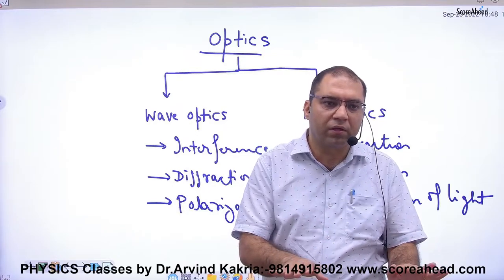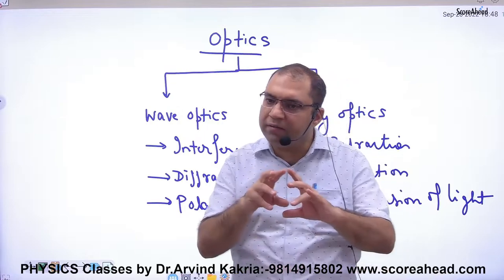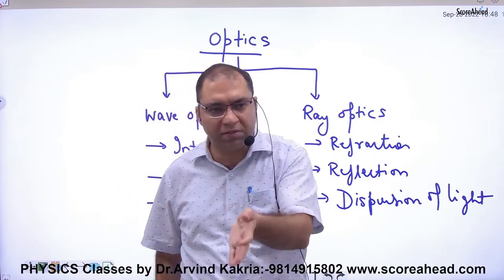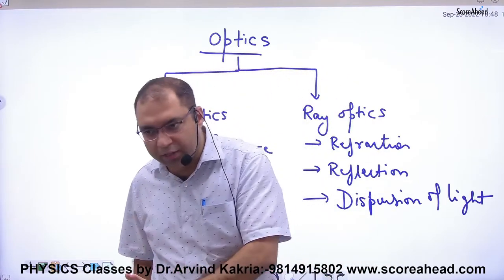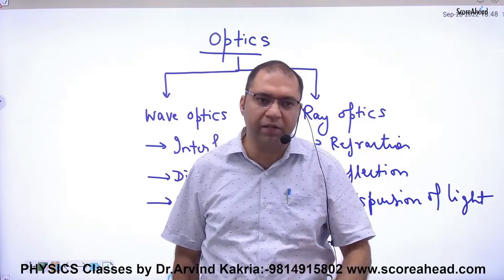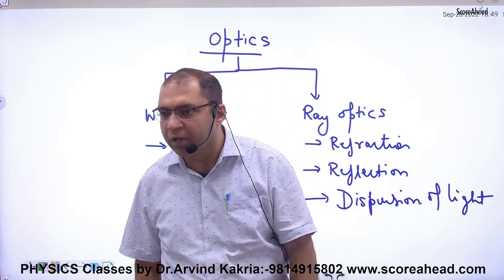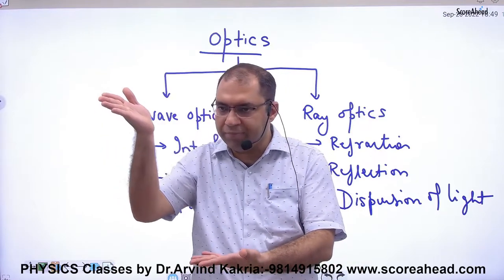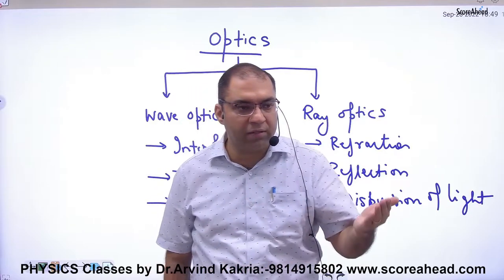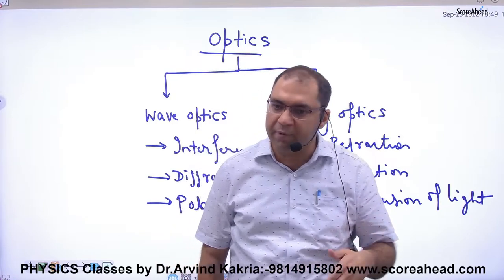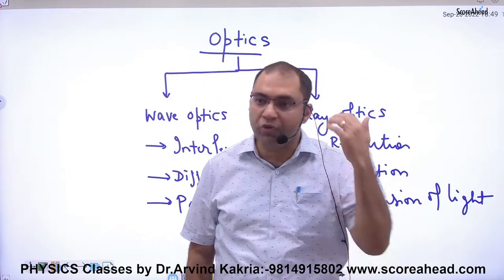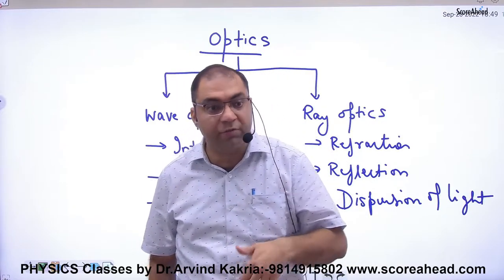How easy or difficult is it to study light? In 1650 to 1700, Newton started the study of light. He thought that light is made of particles — small, massless balls. When a ball comes at an angle of incidence, it goes at the angle of reflection. The speed changes from air to water. This was the basis for saying light is made of small particles traveling in straight lines, and this theory explained reflection and refraction.